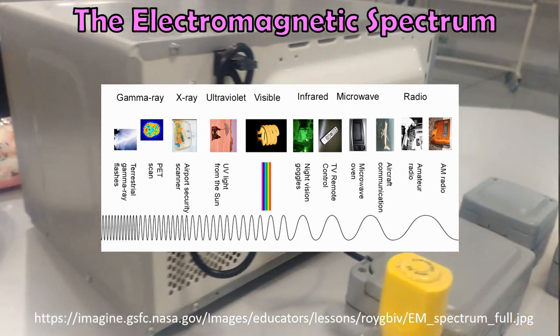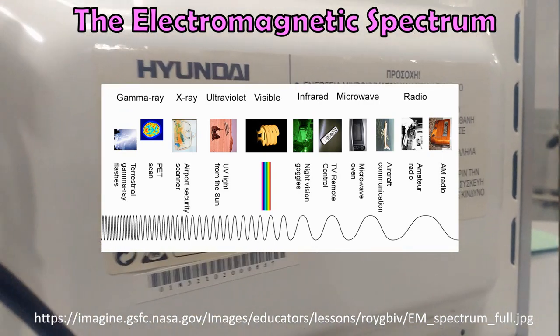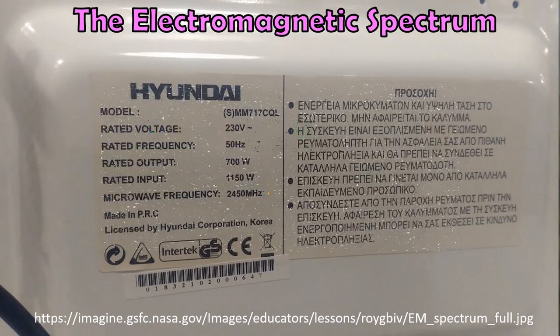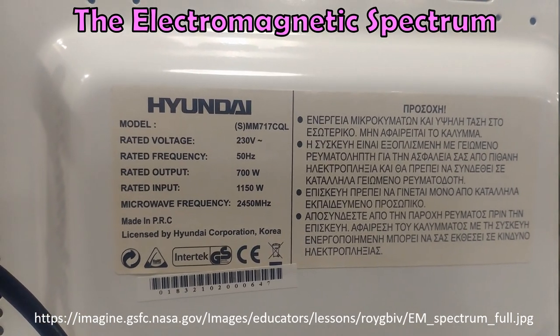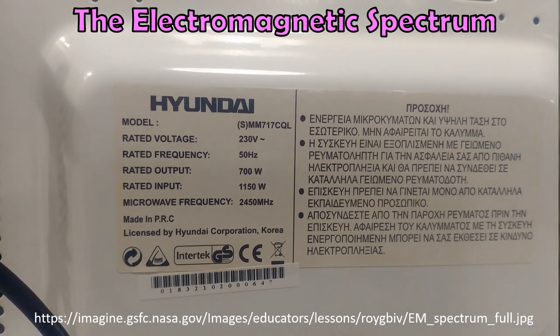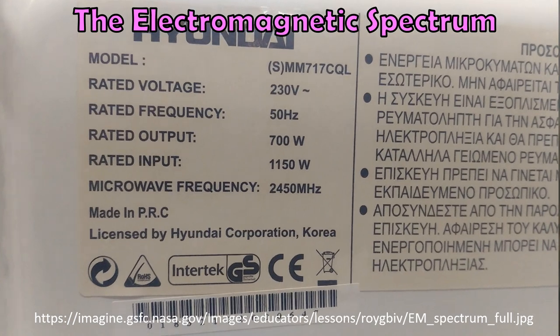Microwaves are specifically used in an oven because they agitate molecules in the food and therefore make the food hotter. The manufacturer of this oven has actually written the frequency down for us: it's 2450 megahertz.